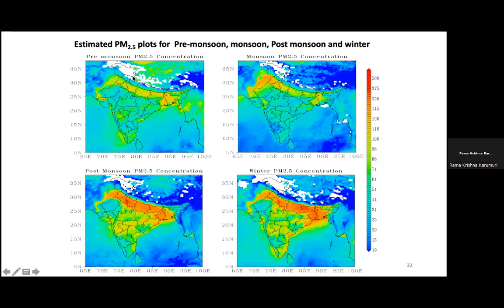In different seasons, PM2.5 concentrations vary significantly. In the pre-monsoon season, PM2.5 is lower. During monsoon, dust from the Arabian Gulf and Thar Desert enters the IGP region. In post-monsoon and winter seasons, with a very low boundary layer, very high particulate matter concentrations appear over the IGP and central India, which are harmful to human health.